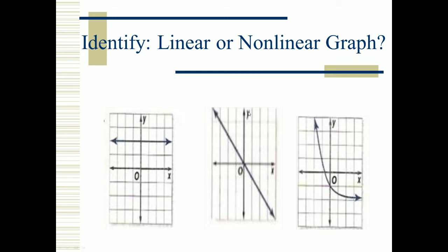Here are the solutions. The first one is linear because it is a straight line. The second one goes straight down horizontally, so that is also linear. The third one is curving and bending, so you would say it's nonlinear.